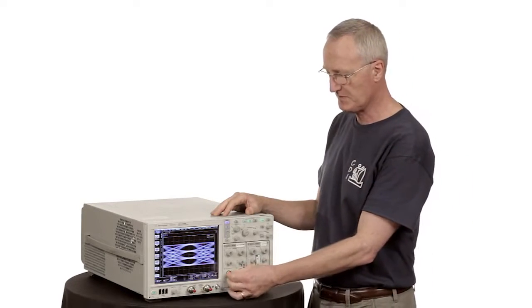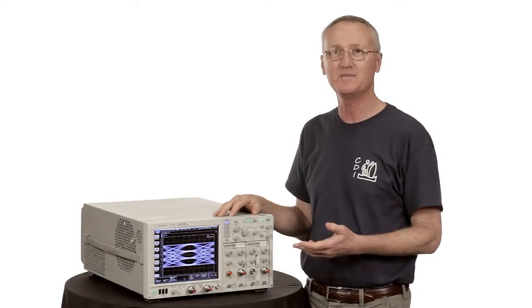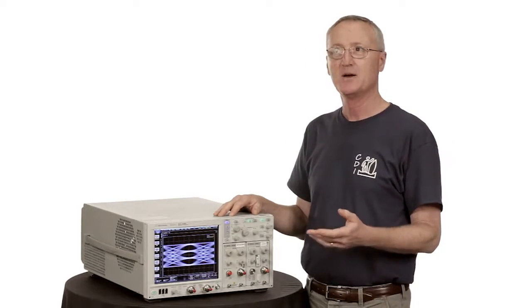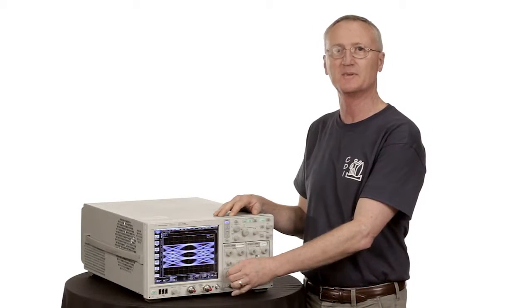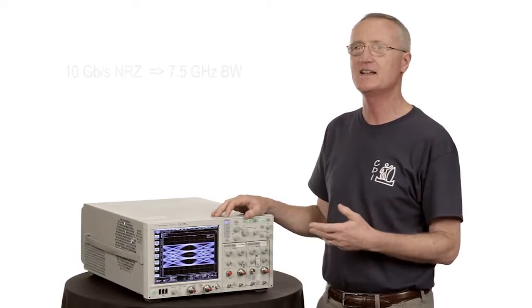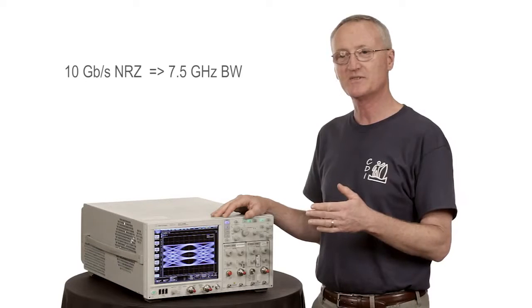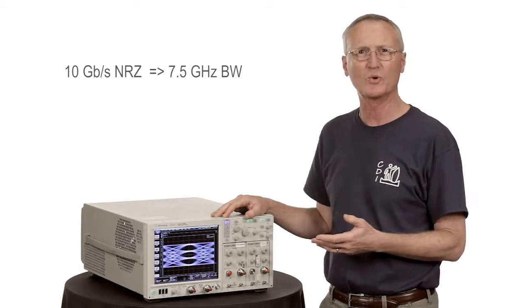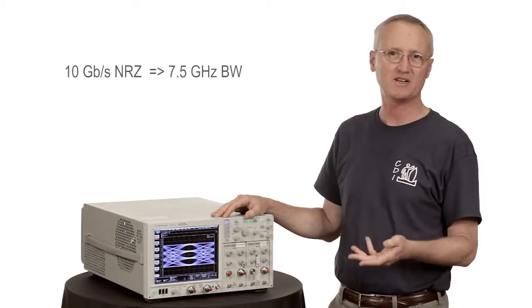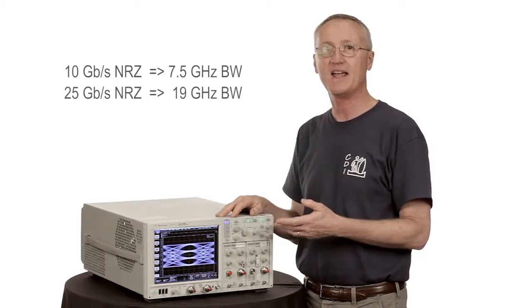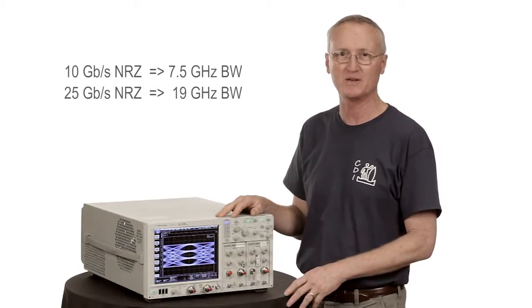In the optical space, they're also going to be doing PAM-4 modulation at 50 gigabit per second. But the way bandwidth is defined for optical measurements has historically been a little bit different. For example, if you had a 10 gigabit per second NRZ signal, the bandwidth was set by what's called a reference receiver where the bandwidth is 75% of the data rate, 7.5 gigahertz. For a 25 gig NRZ signal, we had 75% of that, 19 gigahertz of bandwidth.